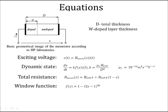The second equation is a dynamic state equation of the current that shows the dependence on X. μ_v is a constant and represents doped mobility.